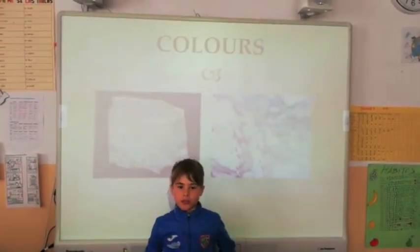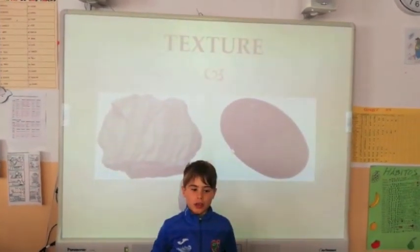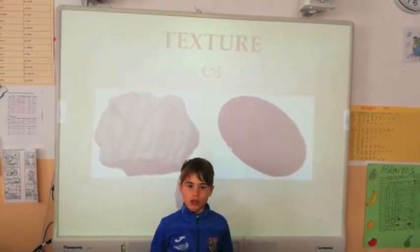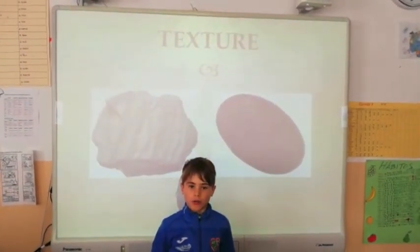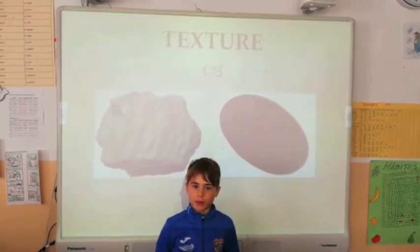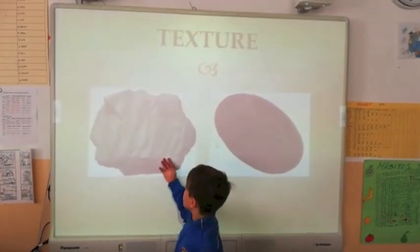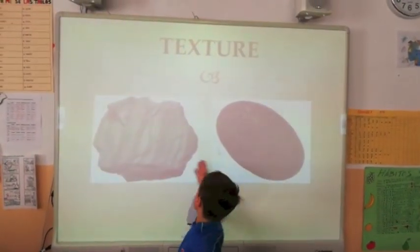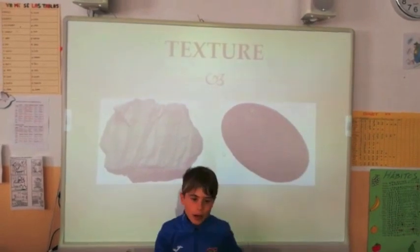Texture. Some rocks are smooth, others are rough. For example, slate is smooth and pumice is rough.